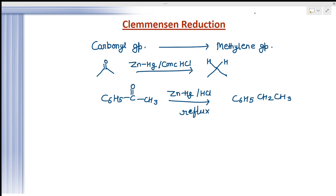This reduction is very useful when ketones have a phenolic or carboxyl group, because those groups remain unaffected. Whenever you have a phenolic group or a COOH group along with a carbonyl compound and you need to convert it to CH2, you can use Clemmensen reduction. Note that the same carbonyl-to-methylene conversion can also be done with Wolff-Kishner reduction.